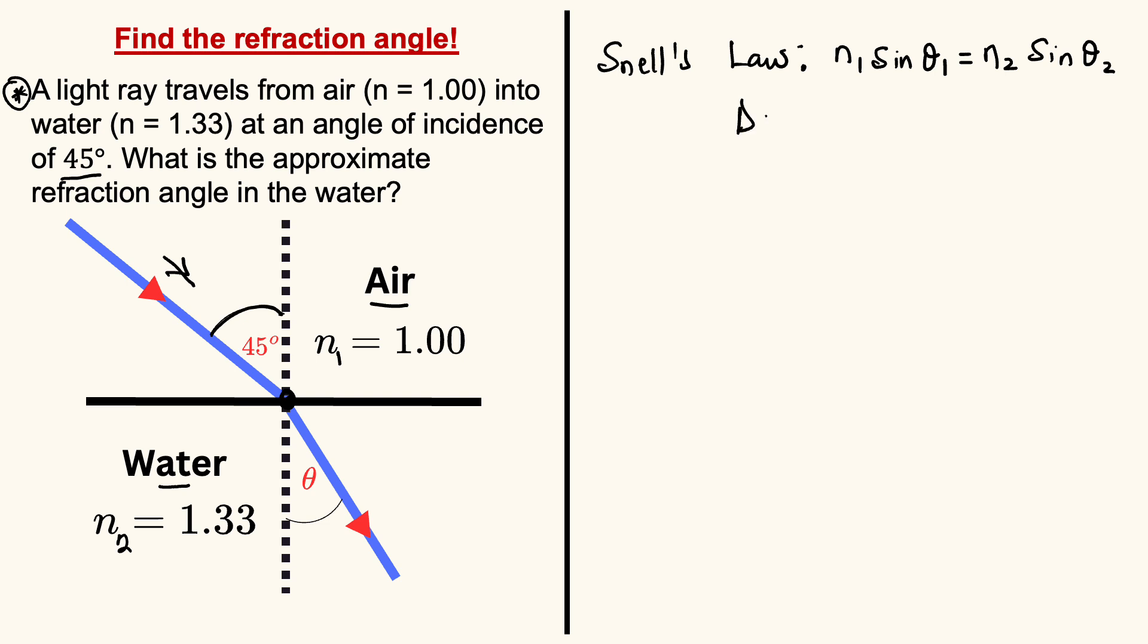To solve such a problem, let's take our data. N1 is 1.00, N2 is 1.33, the angle of incidence theta1 is 45 degrees, and theta2, which is the angle of refraction, is the unknown we are to find because that is the amount of bending. To do this, we just use Snell's law.